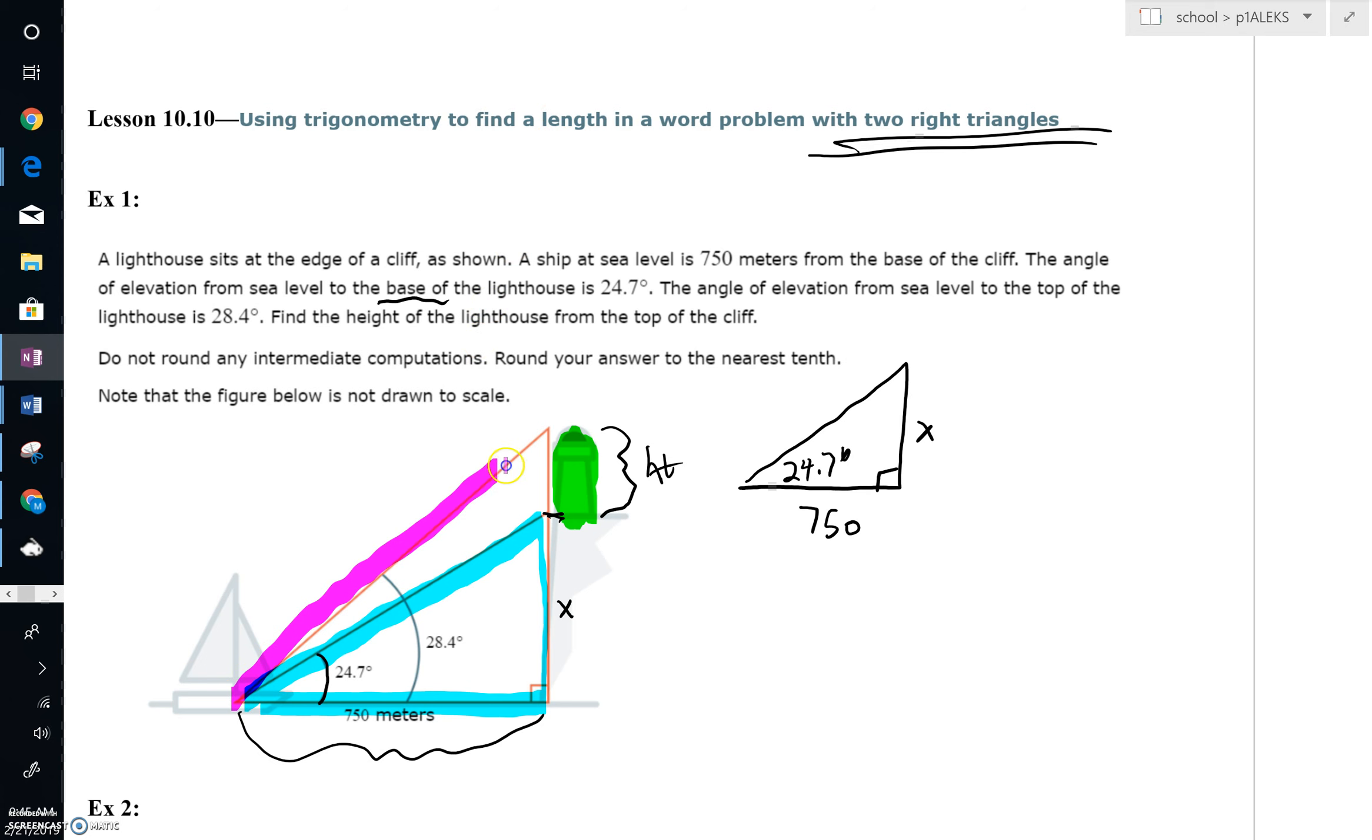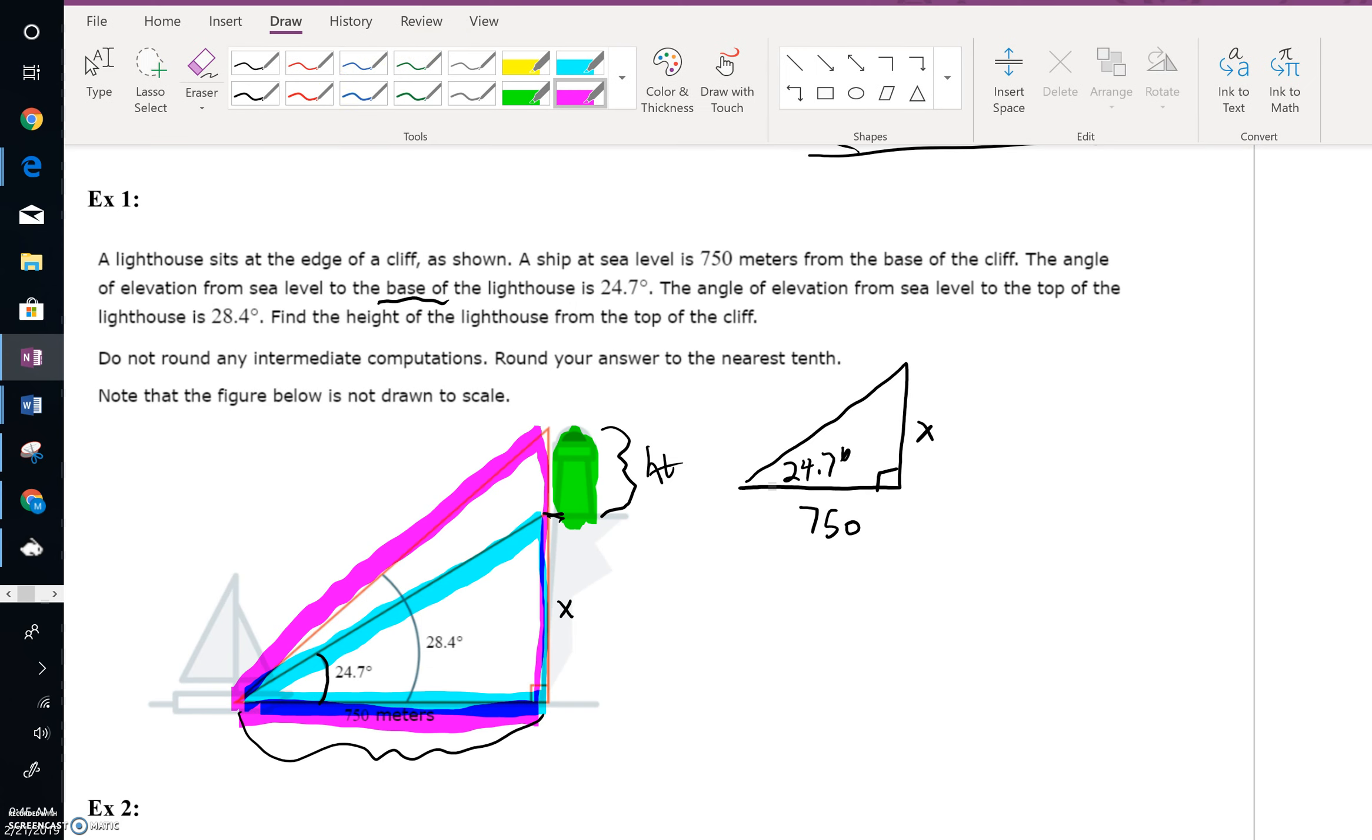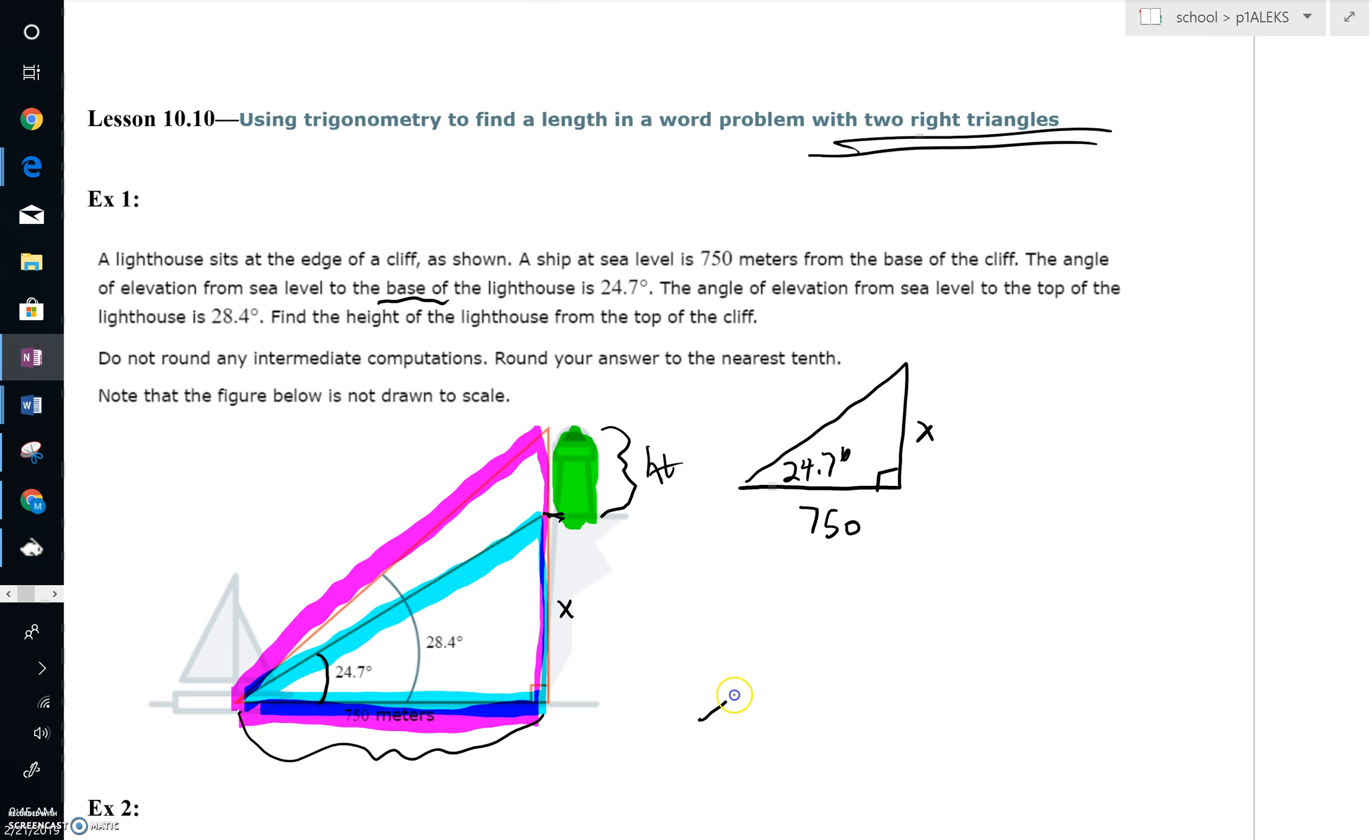But you see, there's also another triangle that we could definitely take a look at. I'm going to highlight that in red. That's right here. And if we were to draw that out, you could say it's still 750 down below, we know that. But now we have a much bigger angle, we've got 28.4 degrees. And that would find the whole length of this side, that's what we'd call Y.